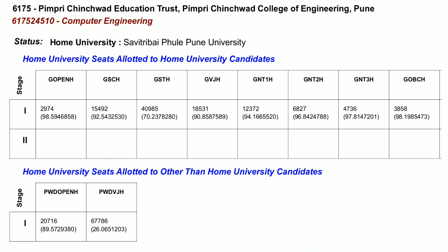For general open category, state merit list number closed at 2974. For SC category, state merit list number closed at 15492. For ST category, 40985. For VJ category, 18531. For NT1 candidates, state merit list number closed at 12372. For NT2 candidates, closed at 6827. For NT3 category, closed at 4736. For general OBC home university candidate, state merit list number closed at 3858.